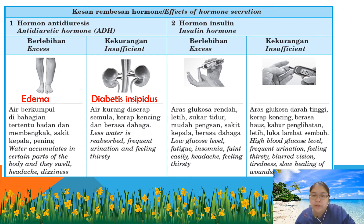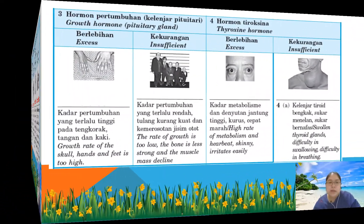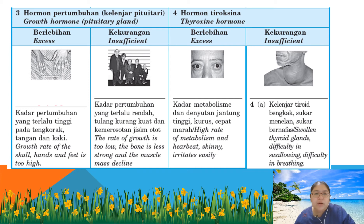For insulin: excessive insulin causes more glucose to be absorbed, lowering blood glucose level — this disease is called hypoglycaemia. Insufficient insulin leads to diabetes mellitus, so we have two types of diabetes. For growth hormone: excessive growth hormone causes gigantism, also called acromegaly. Deficiency of growth hormone causes dwarfism.